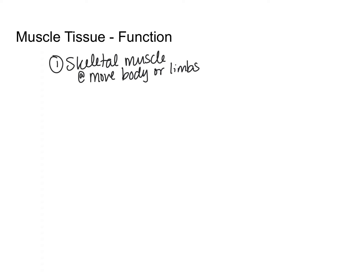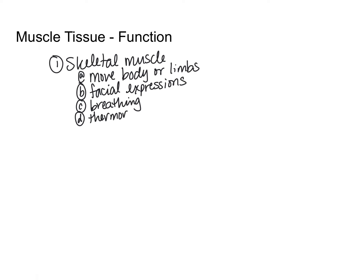Skeletal muscle also has secondary functions. These include facial expressions and breathing — your breathing muscles are skeletal. It can also help with thermoregulation through shivering, which is an involuntary contraction of skeletal muscle that produces heat as a byproduct to warm you up, since muscle cells make and use ATP and release heat during energy conversions. Additionally, skeletal muscle can serve for protection; for example, your abdominal muscles protect your digestive organs.